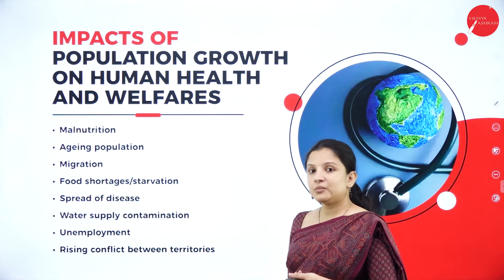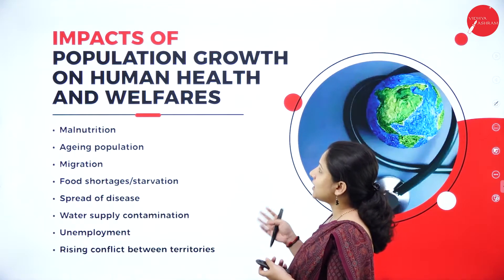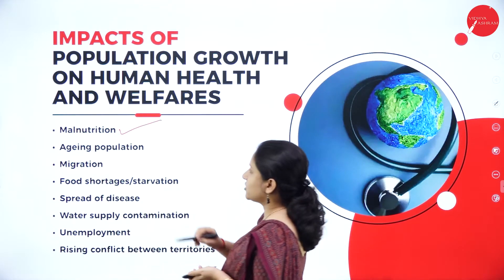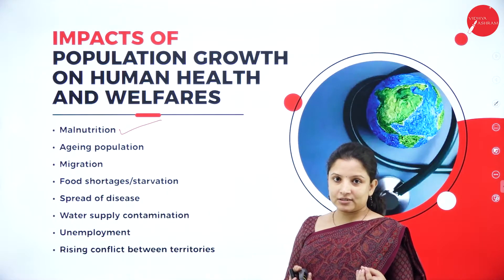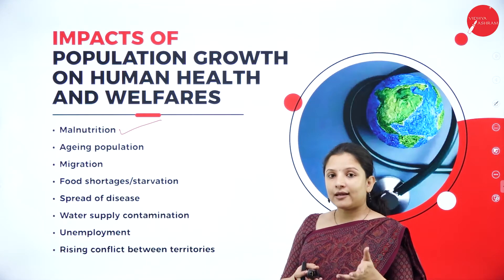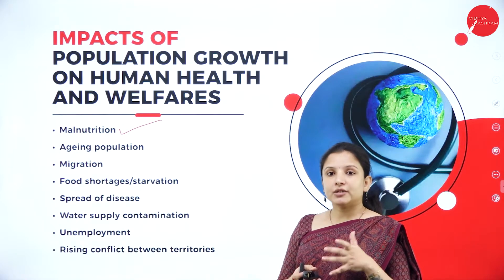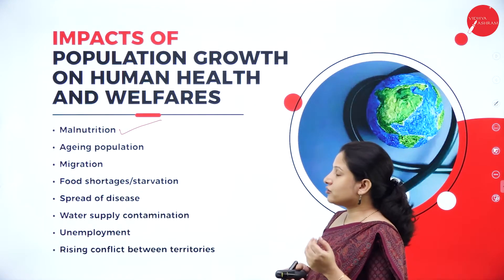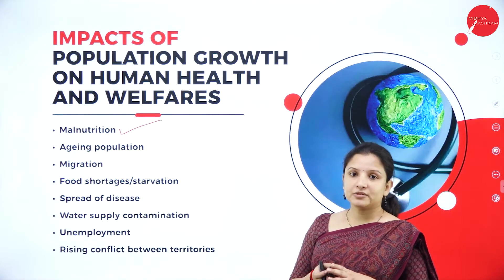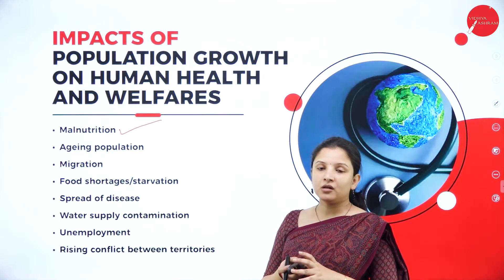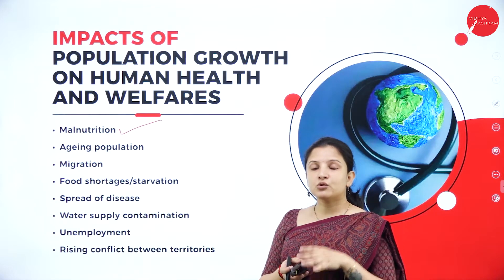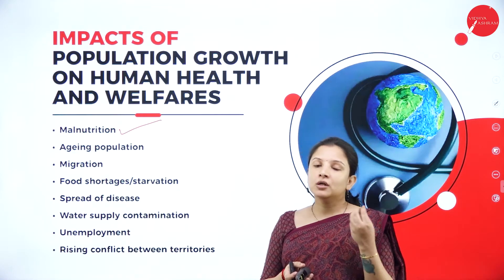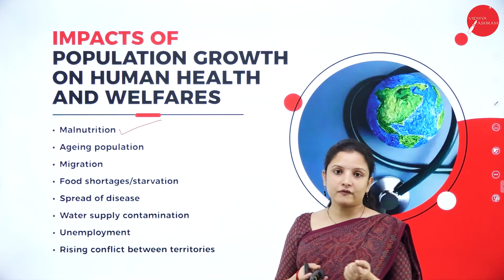Now let's study the impacts of population growth on human health and welfare. First, it will lead to malnutrition. When the population is very high but agricultural land is limited, food production cannot meet the demands of the people. Additionally, to fulfill food demand, a lot of chemical fertilizers are used, which decline the nutritional level of food — so even consuming food may leave us malnourished.